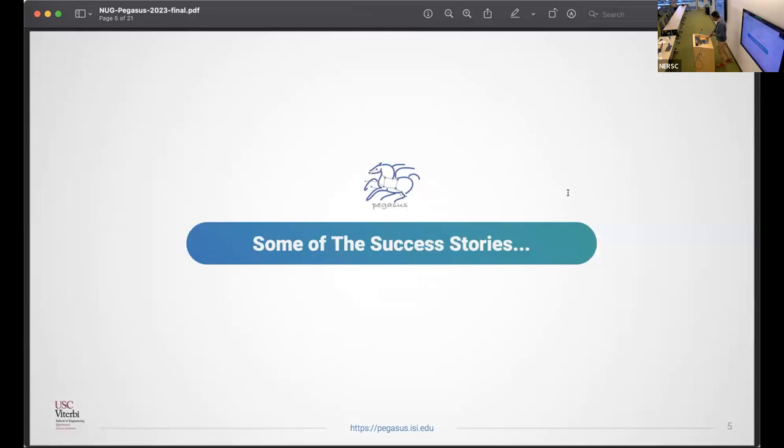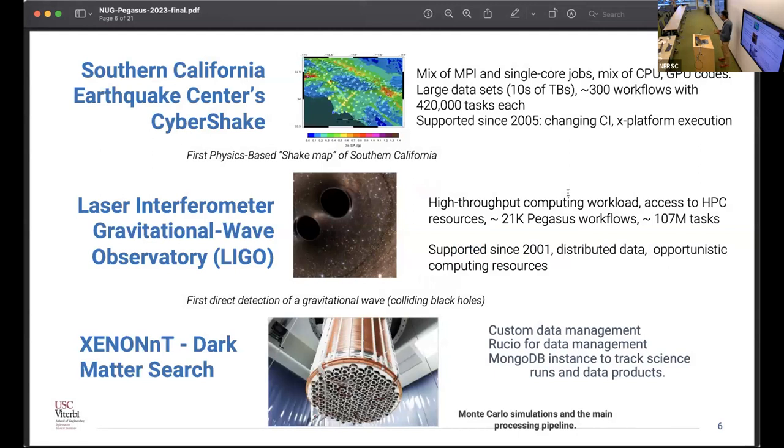I'll give a brief overview of the various applications that have been using Pegasus. We have the Southern California earthquake center, SCEC. Some of you may know about it. They do these large scale simulations and try to build a hazard map of the Southern California region. Now they've been funded to do the map of the whole California region where they're trying to come up with a hazard map that tells or gives you an idea of the risk if a workflow happens on a particular fault. These workflows are a mix of MPI and single code jobs.